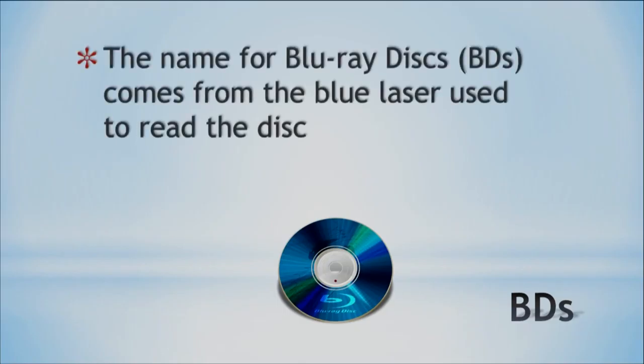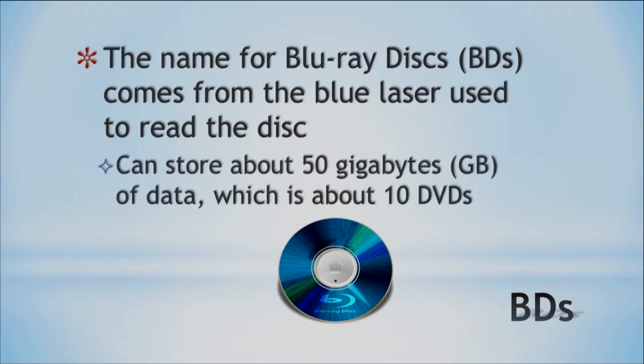One more optical disc — we have the Blu-ray discs, or BDs, though that acronym isn't used much. The name comes from the blue laser they use to read the disc — that's actually why it's called Blu-ray. We can store 50 gigabytes of data, which is about 10 DVDs' worth. So you can put a lot more stuff on the Blu-ray disc than on the DVD. We're just trying to put more and more data into our optical storage.